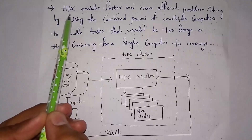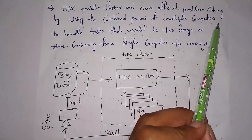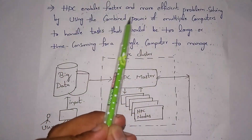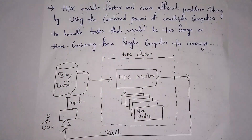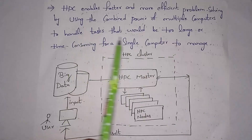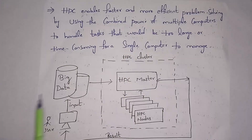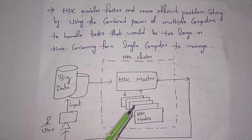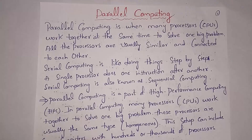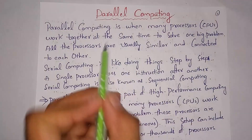High performance computing enables faster and more efficient problem solving by using the combined power of multiple processors, which are like multiple computers working together to handle complex operations that cannot be handled by a single computer. Whenever a user gives big data or a big task, it is shared among multiple processors, they solve the problem, and then give the result back to the user.